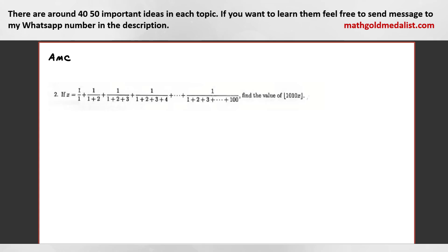Student: Teacher, is it 2,000? Teacher: 2,000. Can you explain your solution? Student: 1 over n times (n+1)/2, and then I flip it: 2 over n times (n+1). Teacher: Exactly, then what? Student: Then I make it into telescoping series.